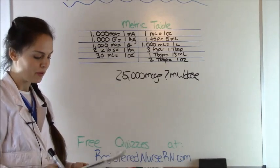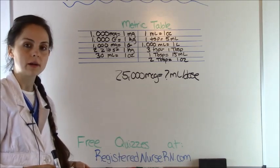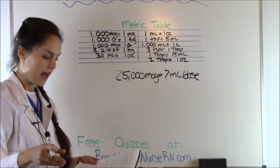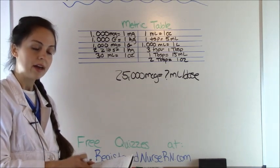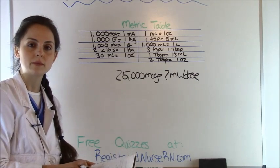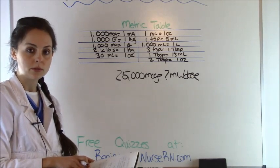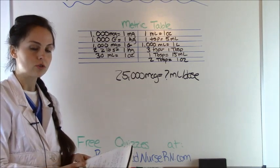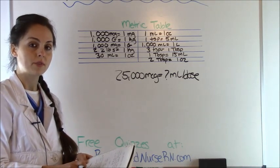In problem two, the doctor has ordered Noxafil at 25,000 micrograms by mouth once a day. We are dispensed a container that has 100 milligrams per milliliter. We need to figure out how many mLs from that container deliver 25,000 micrograms. By looking at this problem, we know it's a multiple-step problem because our vial says milligrams and the doctor ordered micrograms — so we're going to have to use our metric table and convert milligrams from micrograms.